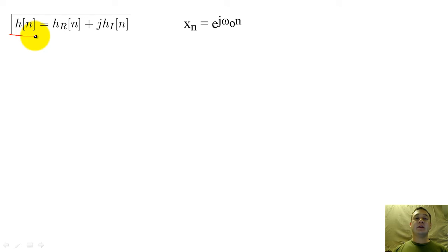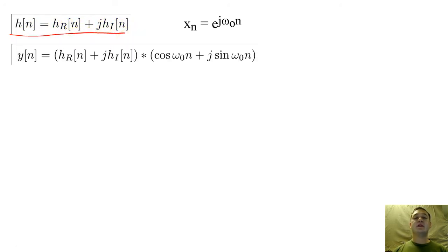If we have a complex-valued impulse response and a complex-valued input, we can still find y of n using convolution.